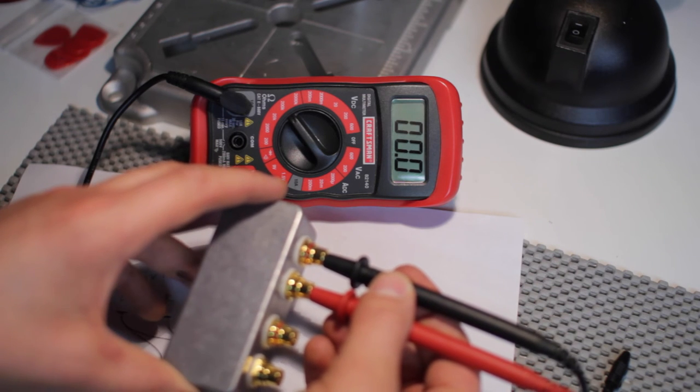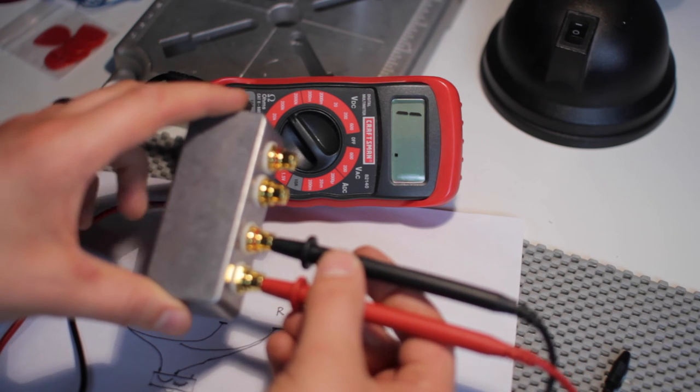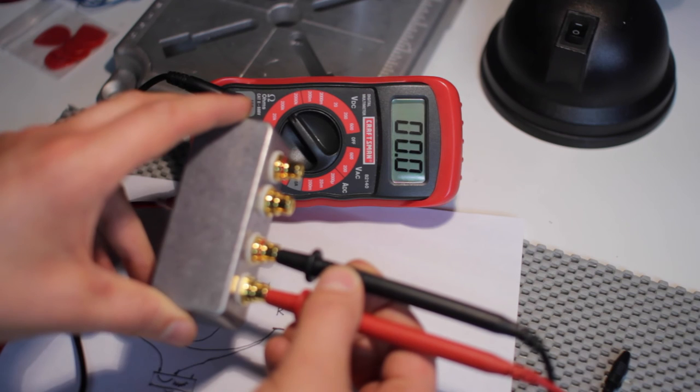But when I flip it to mono mode, we get the zero, which means they're connected. Try it with the left and right out jacks. Not connected in stereo mode, flip it to mono, and they are connected.